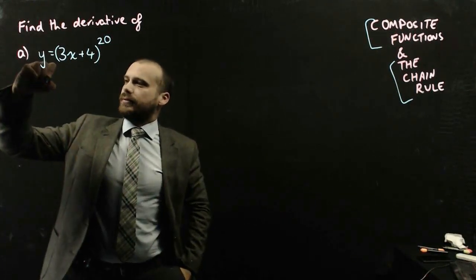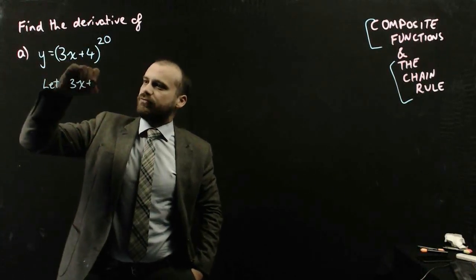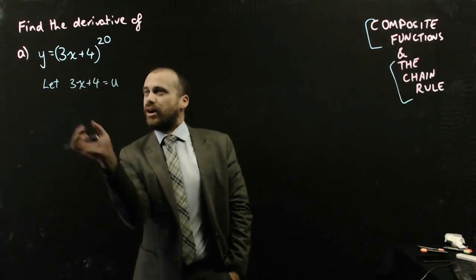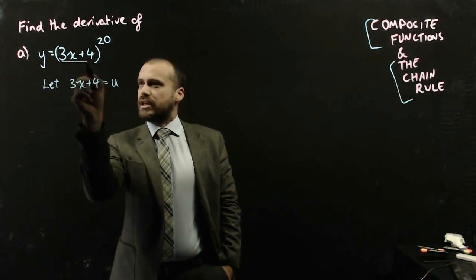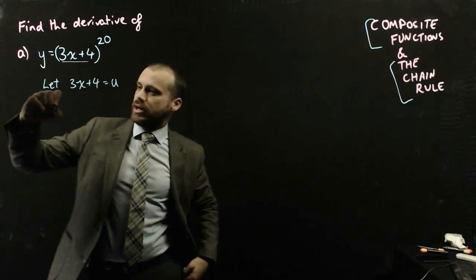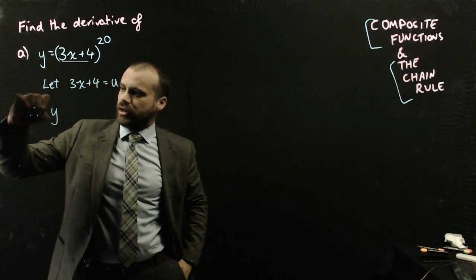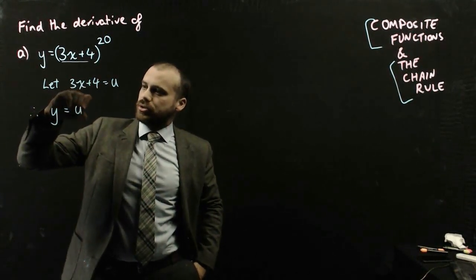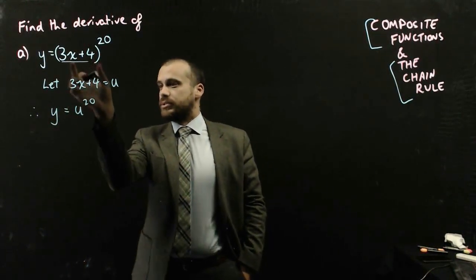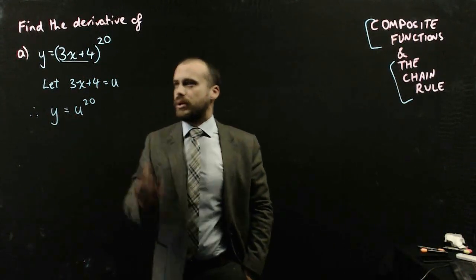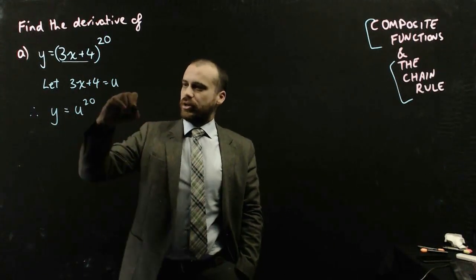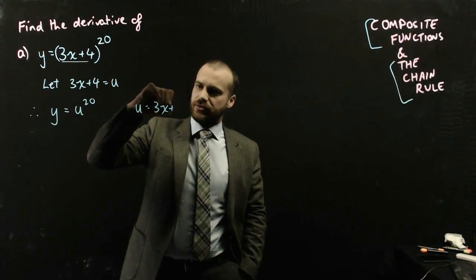I've looked inside the function and seen another function. If I let 3x plus 4 equal u, that means y equals u to the power of 20. And I can also write over here that u equals 3x plus 4.